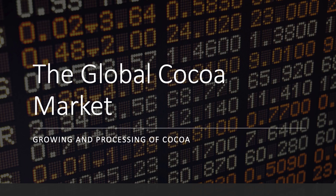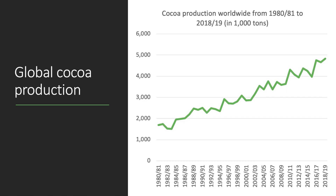A quick look at the global cocoa market for context. Global cocoa production has been on a long-term rising trend, as shown in the chart measuring millions of tonnes of cocoa production each year. However, the long-term sustainability of the cocoa industry is under threat — not least from the impact of climate change, but also the risk that a younger generation of people in cocoa-growing countries will decide that the economic incentives to grow cocoa beans are just not strong enough, given there are plenty of better-paid alternatives.